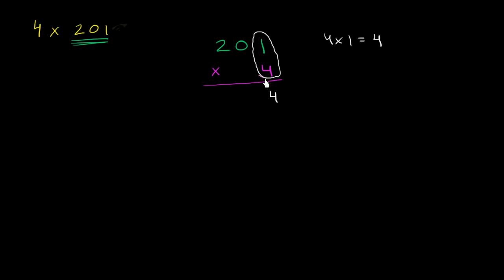Then we can multiply our 4 times the digit that we have in the 10's place. In this place, we have a 0 in the 10's place. So 4 times 0, well, that's just 0. 4 times 0 is 0, we put the 0 in the 10's place right over here.